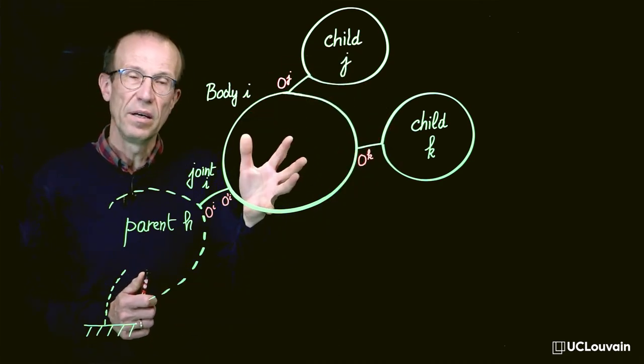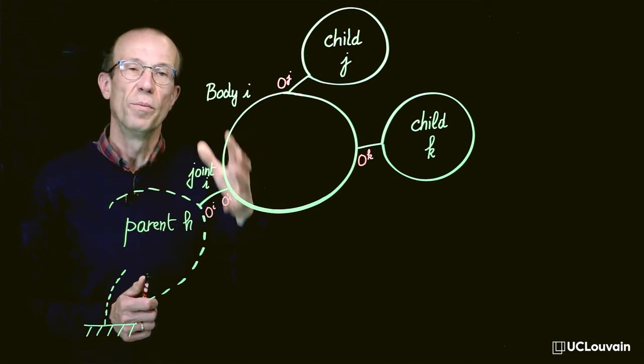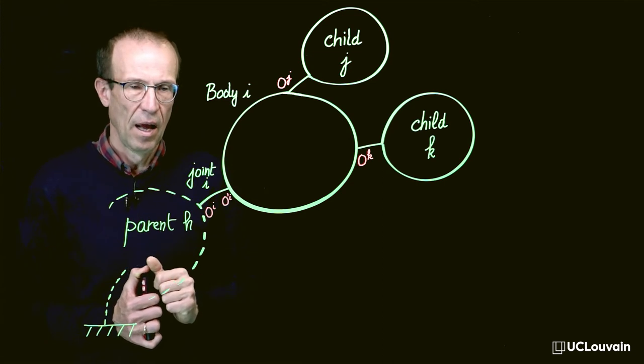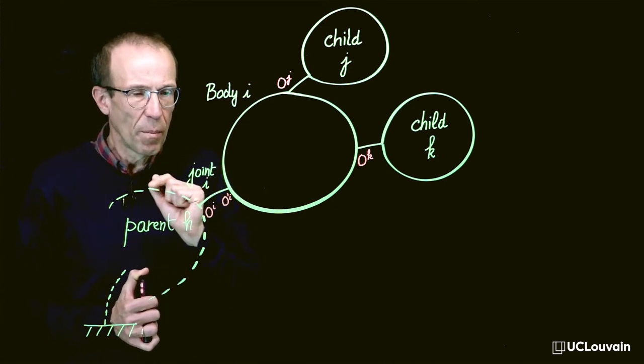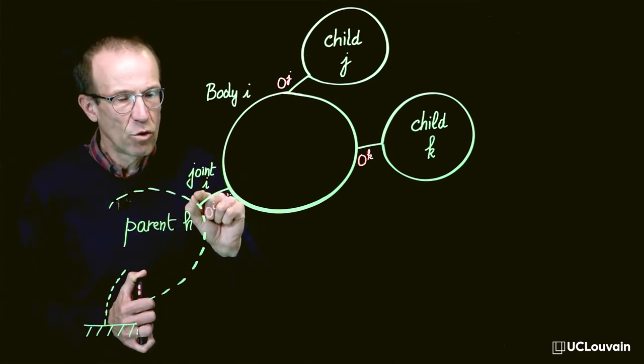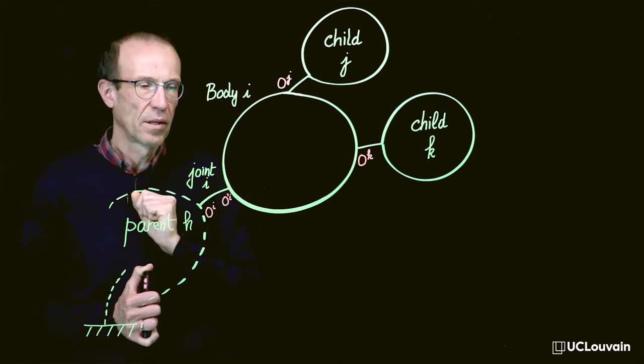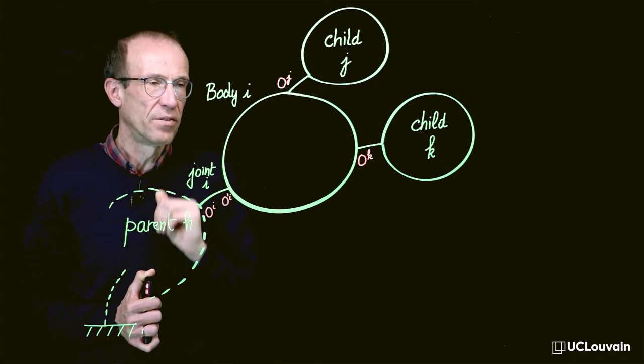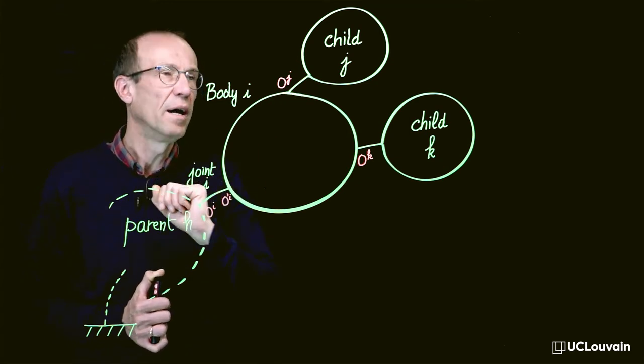Each body is characterized by geometrical data and dynamic data. Each joint between bodies defines two anchor points. The anchor points on body I are, in this example, O'I for joint I, O'J for joint J and O'K for joint K.